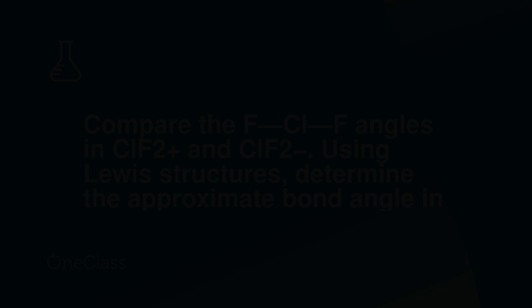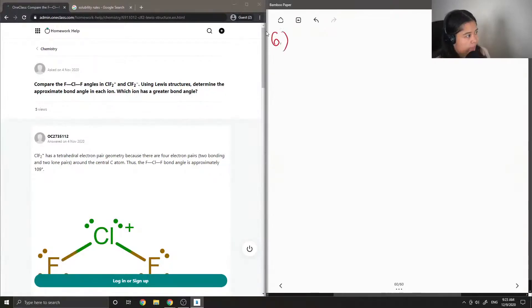Okay, so on to question 6. It says to compare the fluorine-chlorine-fluorine angles in ClF2+ and ClF2-. Using Lewis structures, determine the approximate bond angle in each ion. Which ion has a greater bond angle?